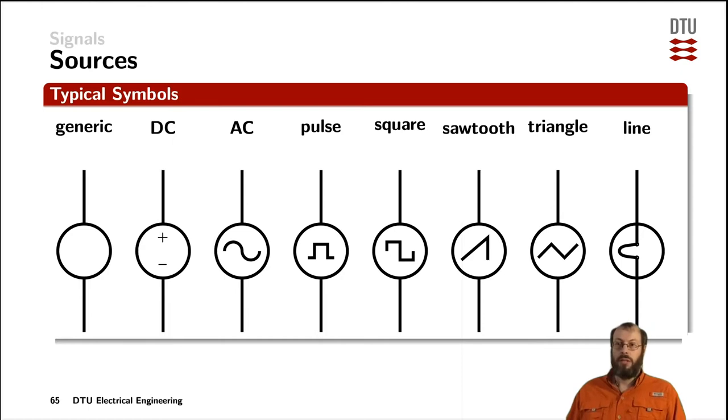Now there is a generic symbol for a source which typically looks like a circle and has two connections. If you want to indicate that the source is a DC signal, you can add a plus and a minus to indicate the polarity of the DC signal.